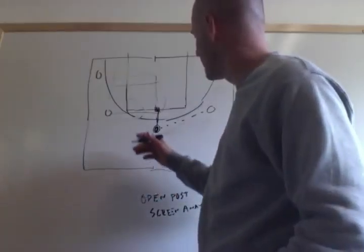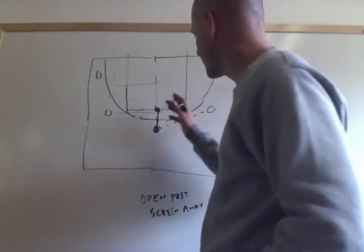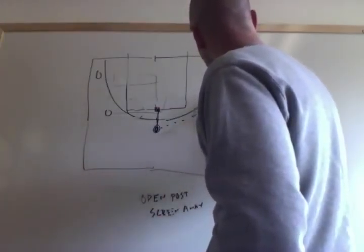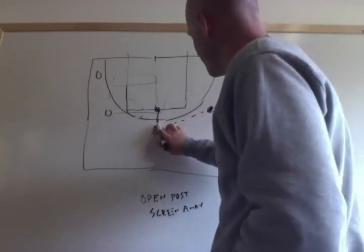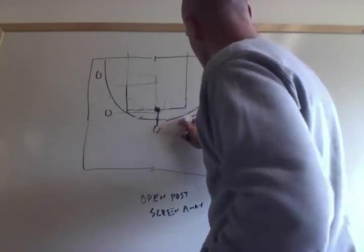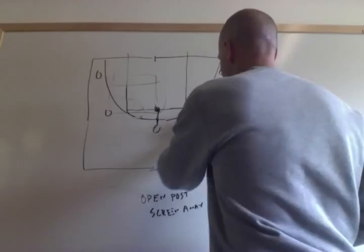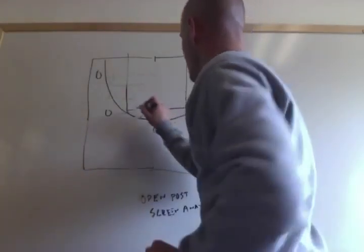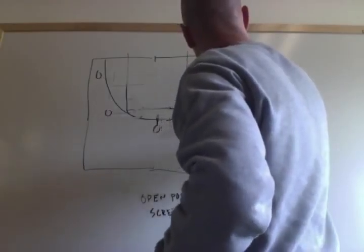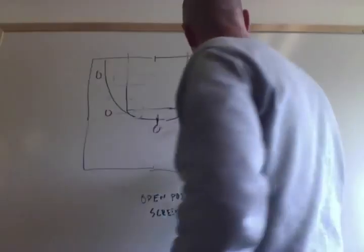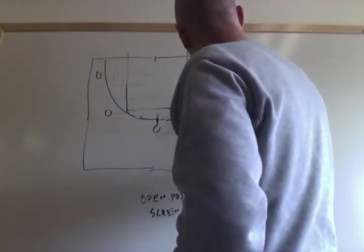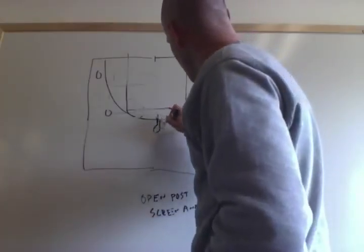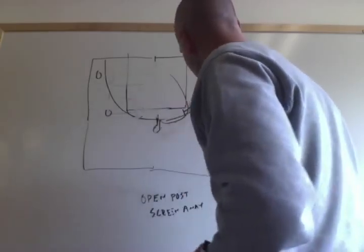The screen away can also happen to the corner position and have that player come across and look for the ball. That's the screen away series on a pass to the wing. The pass goes from the wing to the corner and it becomes a basket cut, and then screen away for the top player setting up the cut and looking for a curl cut.